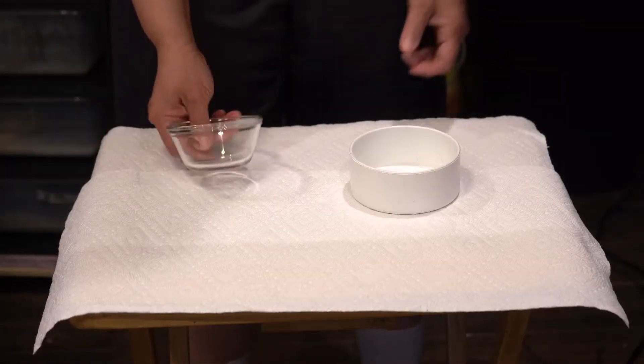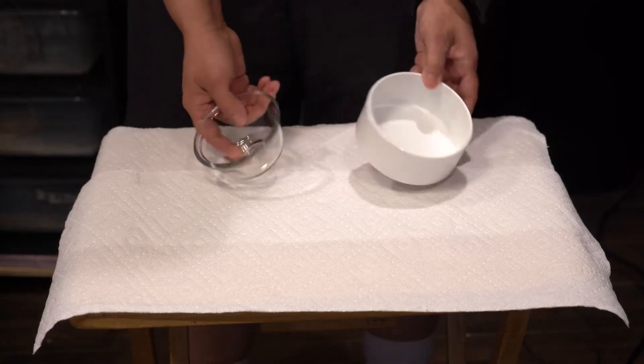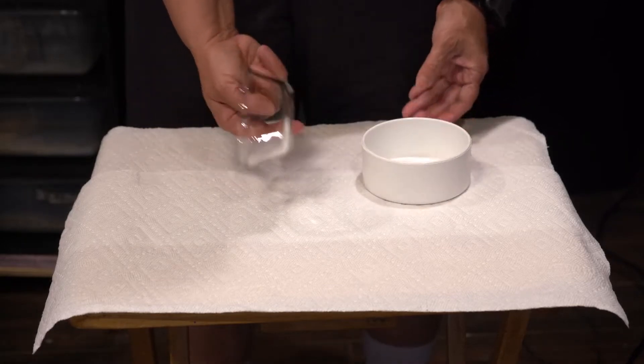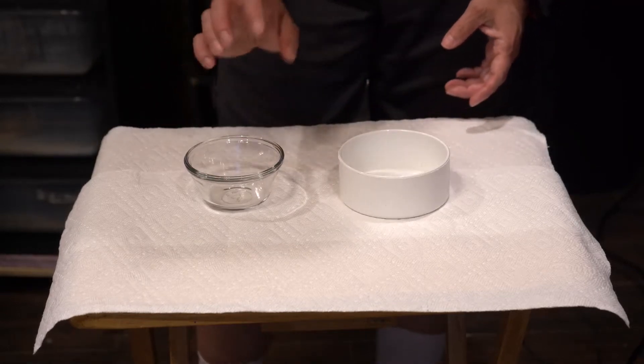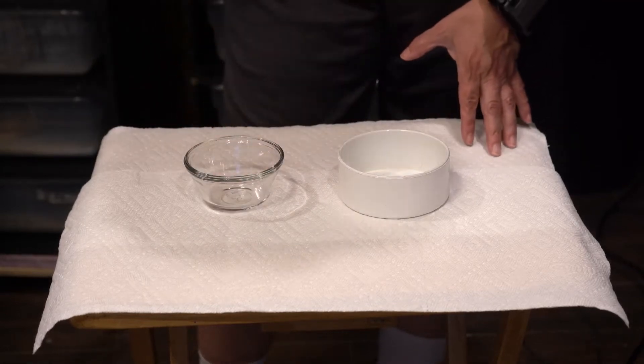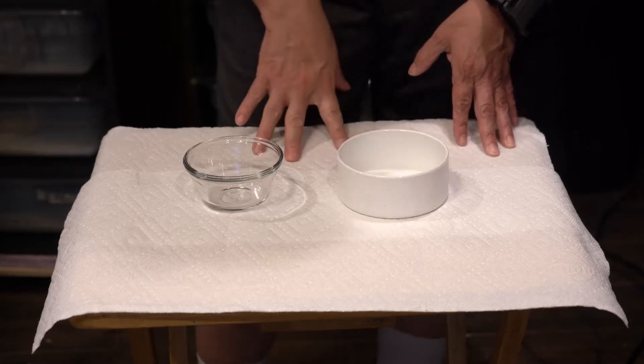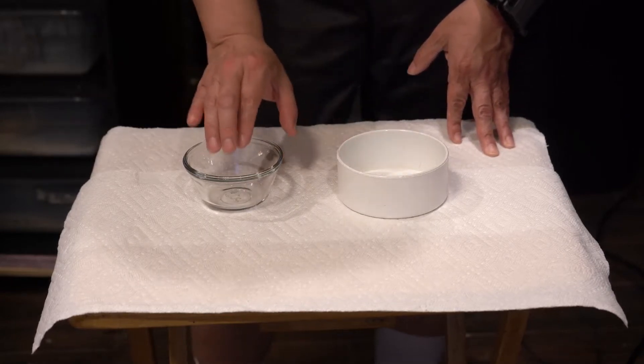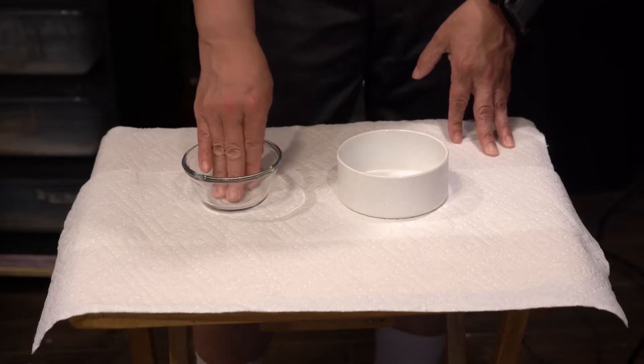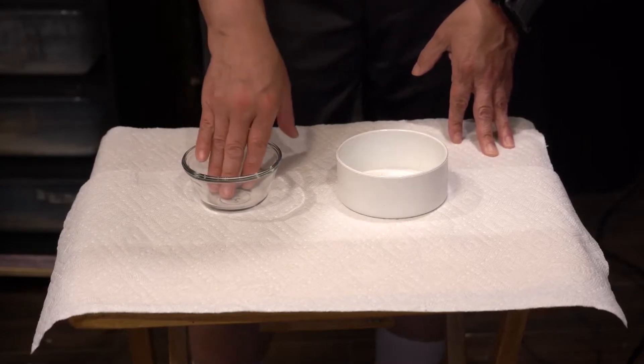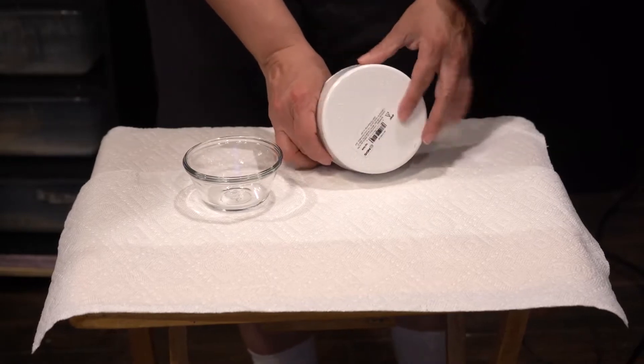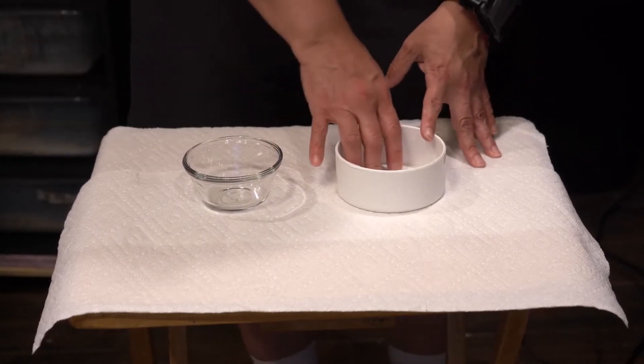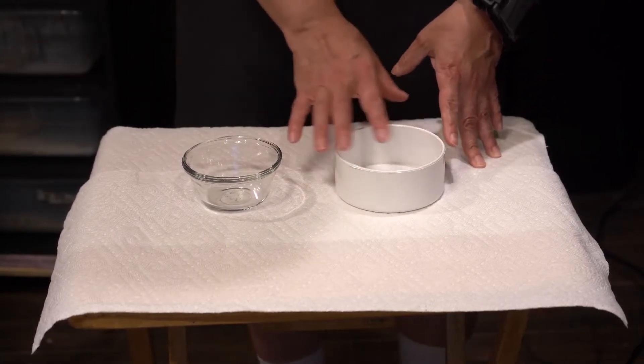We now have two options for the water dish. You have the heavy glass bowl or you have this coupler. Either one is a good option. They'll both create the right humidity. The bowl is very heavy, so it's hard for the animal to turn over, especially the babies. The plastic coupler has a very wide base, so it keeps the animal from turning it over because of how wide it is.